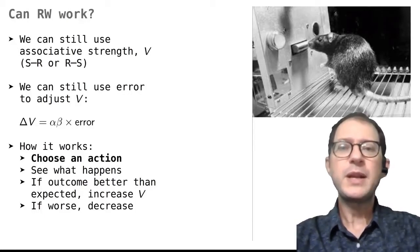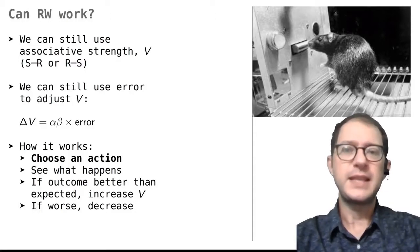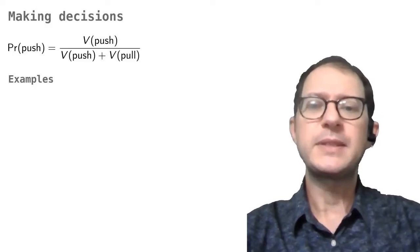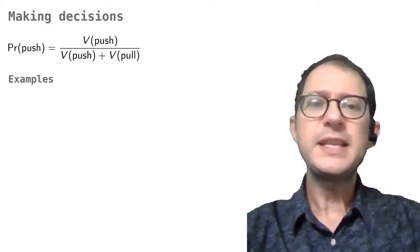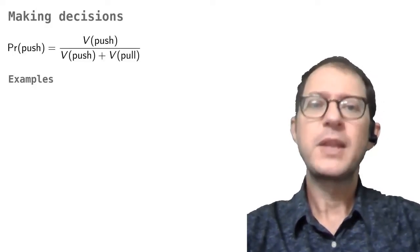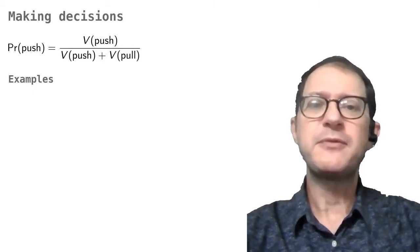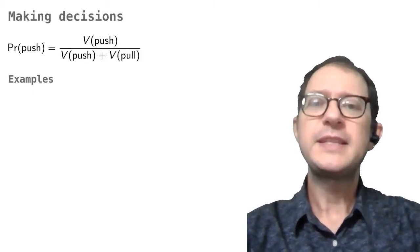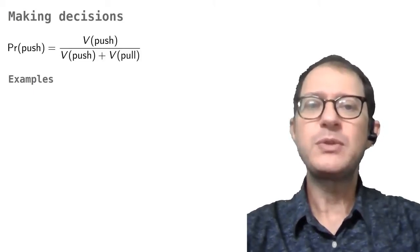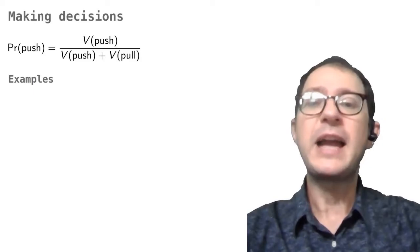This is essentially all there is to using the Rescorla-Wagner model for instrumental conditioning, but there is still one small missing piece. How does the rat choose what to do? We did not have to bother with this in Pavlovian conditioning, because as we said earlier, the conditioned response is not really chosen, it is always the same. So we are back to asking how animals can make decisions. The idea is still to use the associative strength. This is easy to understand if we interpret the associative strength as the value that the animal gives to the action. It is natural to think that the animal will choose more often the actions with a higher value.